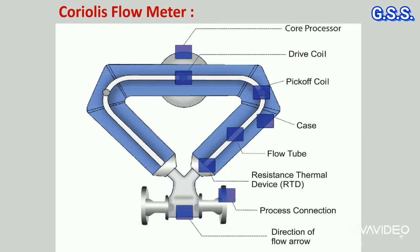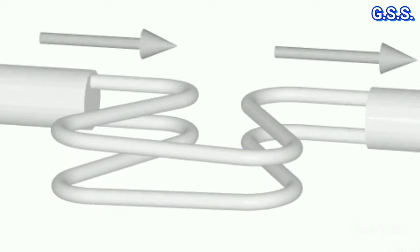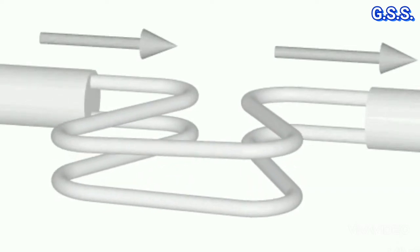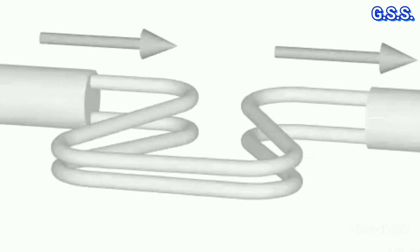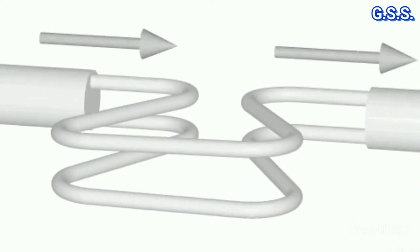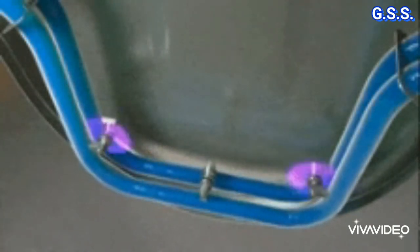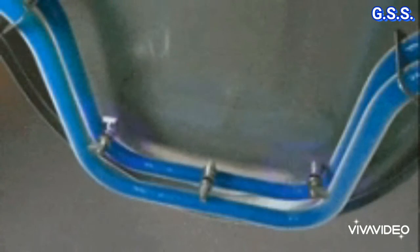Coriolis flow meter measures mass flow rate. It works based on the inertia caused by fluid flowing through the oscillating tubes. Due to that inertia, oscillating tubes are twisted, which is proportional to the mass flow rate. This twisting of oscillating tubes is measured by a sensor to generate a linear flow signal.